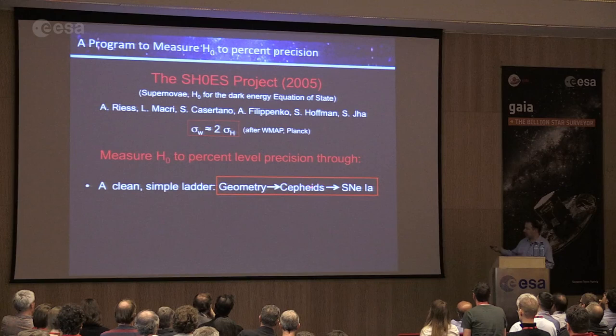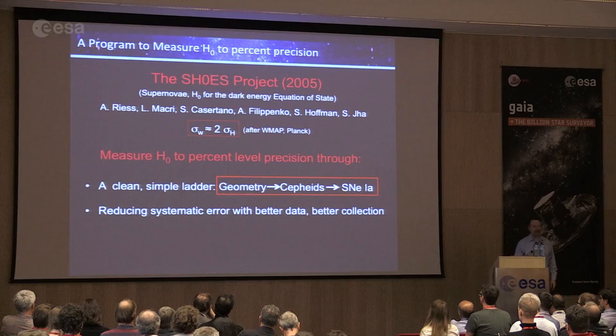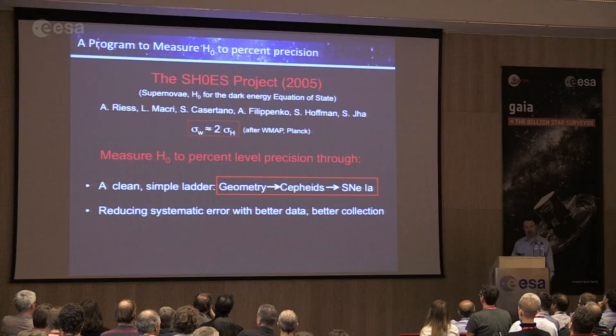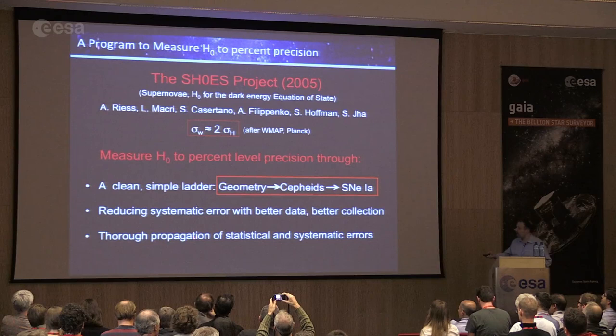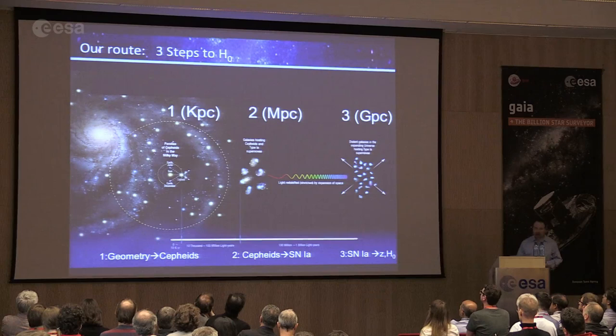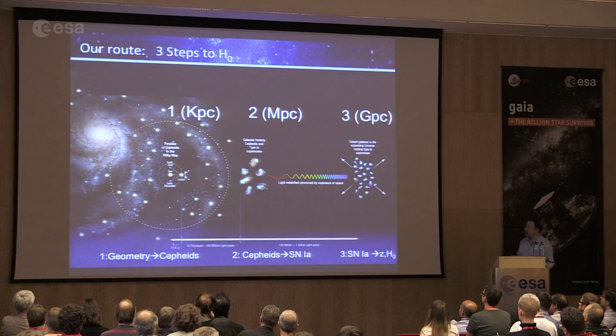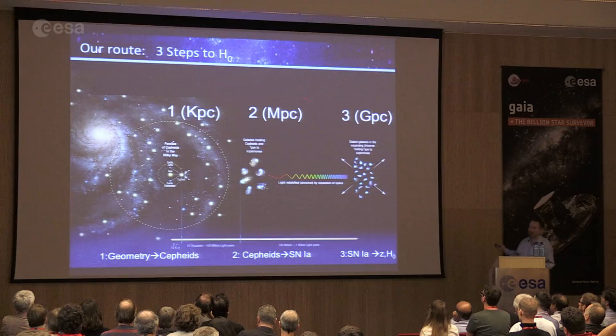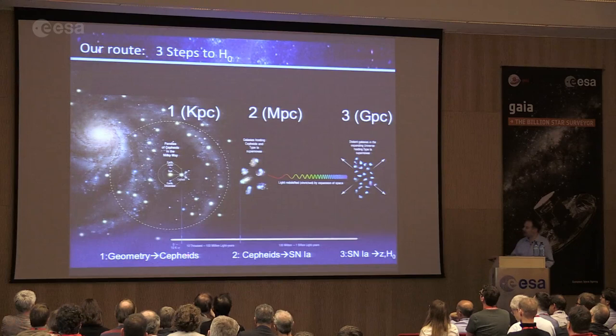To reach one percent precision, we built a simple ladder of measurements using the most reliable tools, linked as well as possible: geometry, Cepheids, and Type Ia supernovae. We reduce systematic errors by taking data in better ways, and we thoroughly propagate statistical and systematic errors to have a true error budget. Graphically, the route has three steps: kiloparsecs to megaparsecs to gigaparsecs — geometry to Cepheids, Cepheids to supernovae, supernovae into the expansion of space.